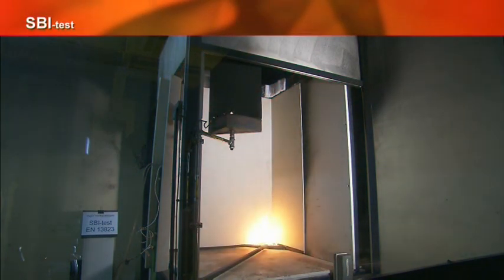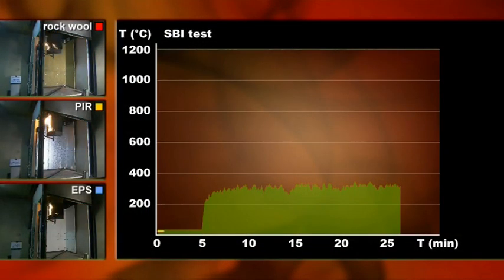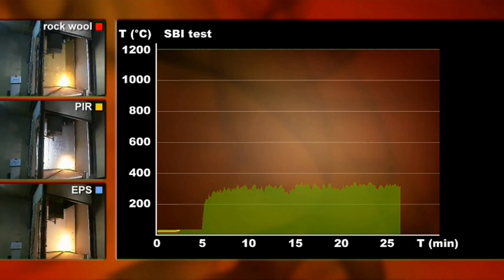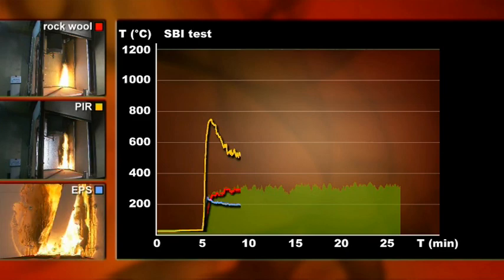The temperature load at the top of the tested materials is 300 degrees Celsius, in accordance with the zero measurement at a height of 1.5 meters. This concerns the first phase of a fire before flashover occurs. At this temperature load, PIR creates double the temperature development in comparison with rockwool and EPS.